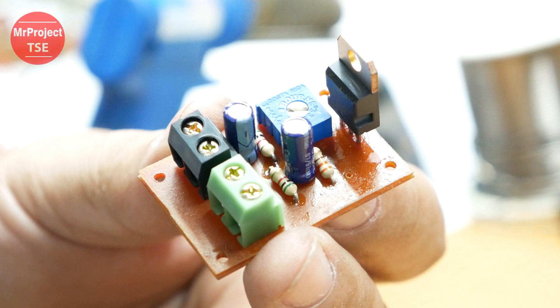Hi, I'm Mr. Project TSE. In this video, I will make a variable power supply. I will use the well-known IC RM317. Let's do this experiment.